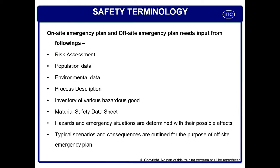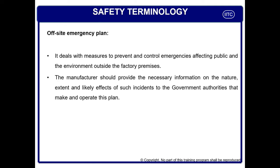Hazard and emergency situations are determined with the possible effect. Typical scenarios and consequences are defined and practiced in advance so that there is not much damage in case of any emergency. On-site emergency plan means those plans which define the methods to control damage if an emergency happens inside the plant and the emergency remains inside the boundary of your plant. Off-site means the moment any emergency which happens in your plant goes outside the boundary, then the off-site emergency plan comes into the picture.